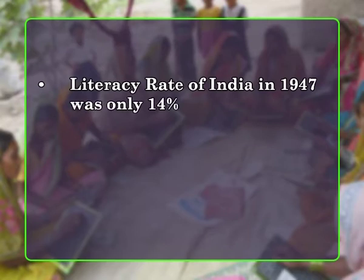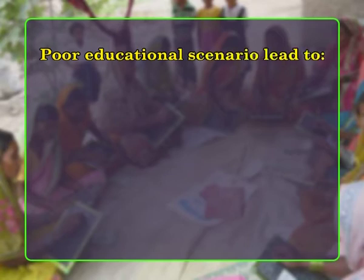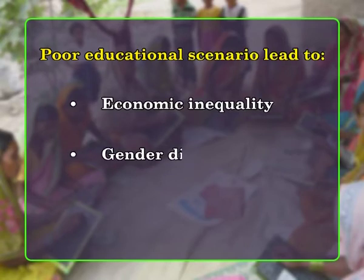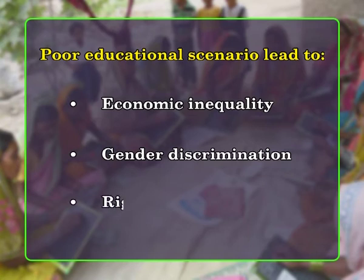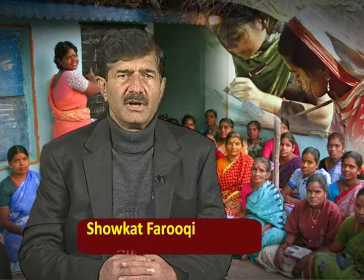The literacy rate of India in 1947 was only 14 percent, and female literacy was abysmally low at 8 percent. Only one child out of three had an opportunity for enrollment in primary schools. This poor educational scenario led to economic inequality, gender discrimination, and rigid social stratification. Thus, eradication of illiteracy became one of the major concerns for the government of India.